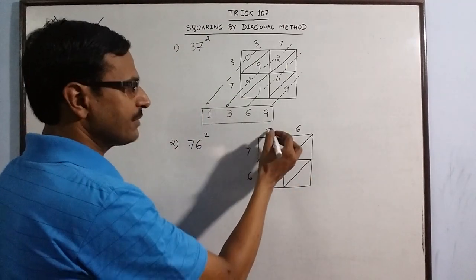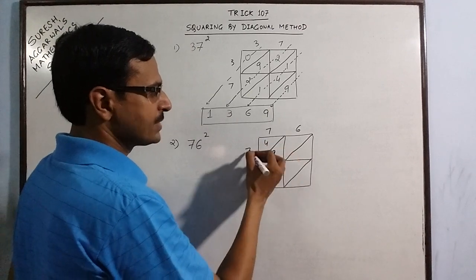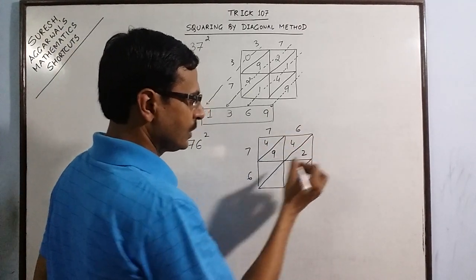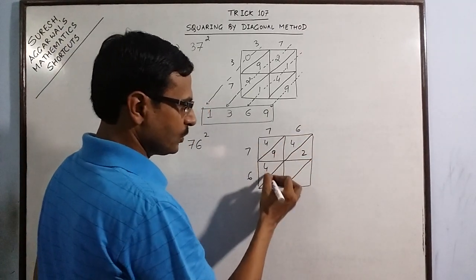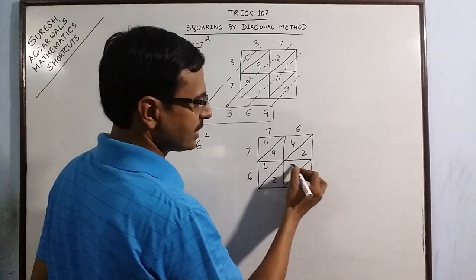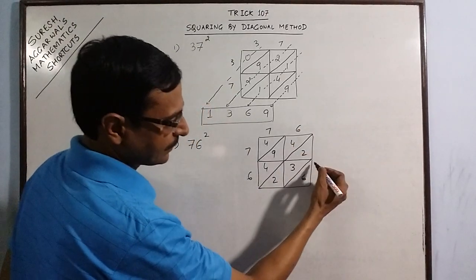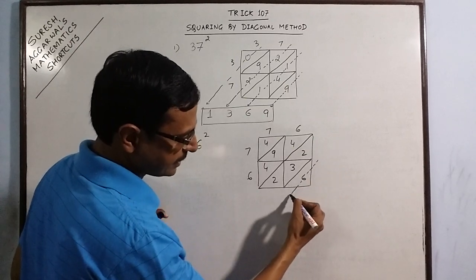Now have the products. 7 into 7 is 49. 7 into 6 is 42. 6 into 7 is 42. And 6 into 6 is 36. Now see, the first number is 6.